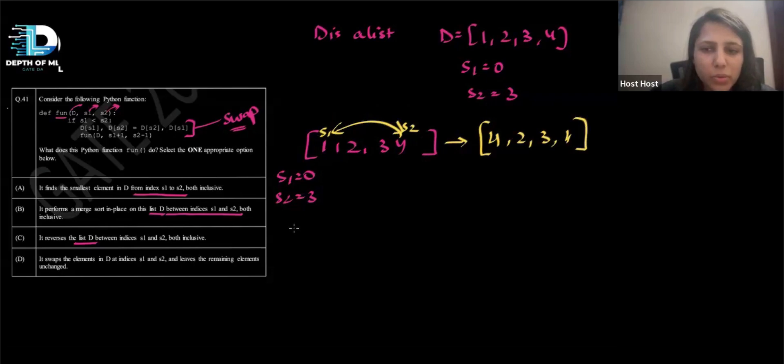Now again, this is a recursive function. So it's calling function on this D again, where it has incremented S1 with plus 1 and S2, it has been decremented by 1. So let me do S1 with plus 1. So this is S1 is 1 and S2 becomes 2. So my S1 is now here and S2 is here. So it's again going to do a swap. So we'll come here and it'll do the swap because S1 is less than S2 and it will do the swap. So it will become 4, 3, 2, and 1.